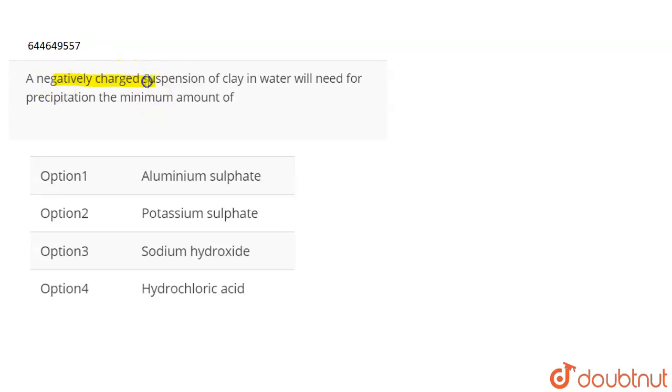The question is: a negatively charged suspension of clay in water will need for precipitation the minimum amount of which substance? So basically they're talking about the coagulation value.